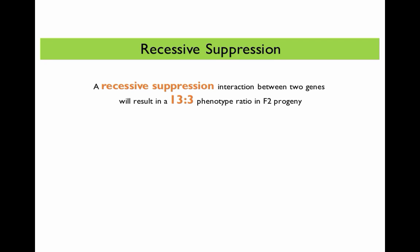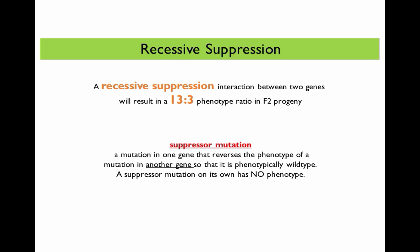More specifically, a recessive suppression interaction is an interaction between two genes when you cross a double heterozygous individual to another double heterozygous individual and you see a 13 to 3 phenotype ratio in the F2 progeny. The interaction of recessive suppression results from what we call a suppressor mutation in one gene, and a suppressor mutation is a mutation in a gene that reverses the phenotype of the mutation in another gene, so that the phenotype is wild type.